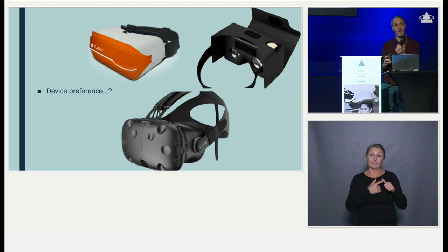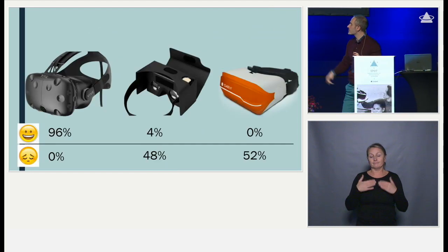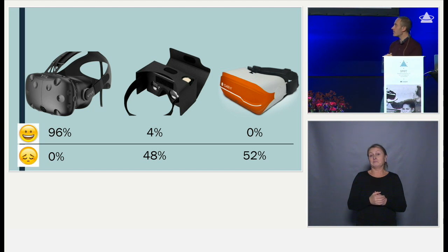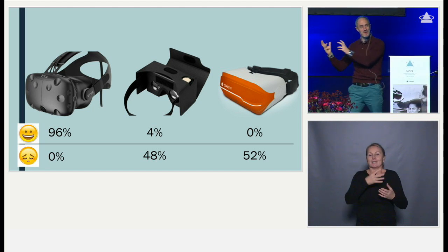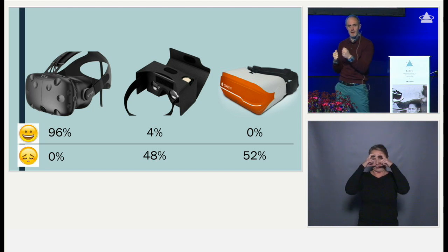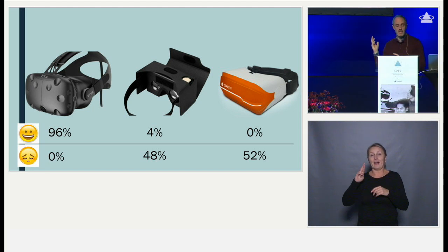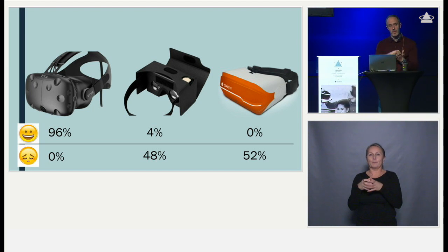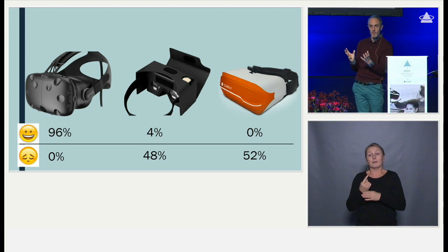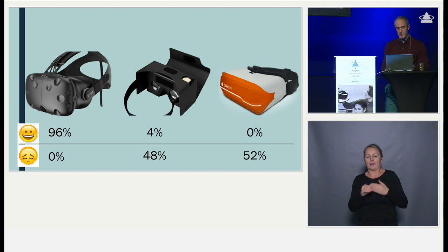We first asked about device preference. Probably no surprise to find out that the highest or most expensive device — the HTC Vive — was reported as the favorite by the pupils. This was followed by Google Cardboard, the low-tech option. Unfortunately, the Class VR option was the least preferred. A caveat: we didn't explore all possible options in terms of what these devices could do, so they might be able to do more than we experimented with.